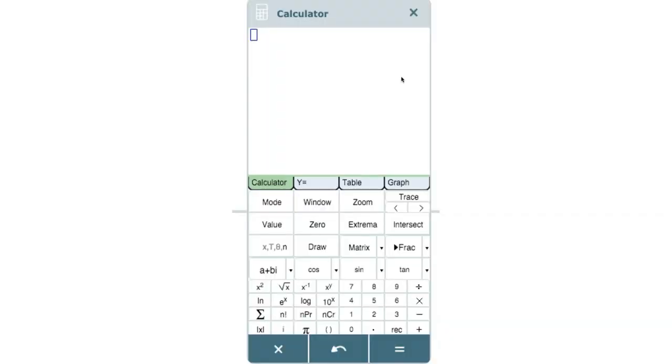On the calculator, we will start by going to the y equals menu. On y1, we will type our function. Start here. After we type our equation, we will then press graph.